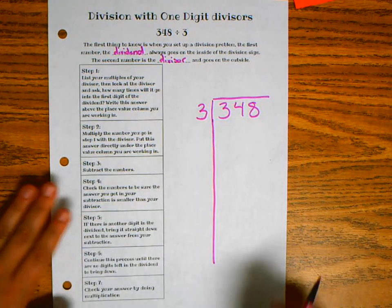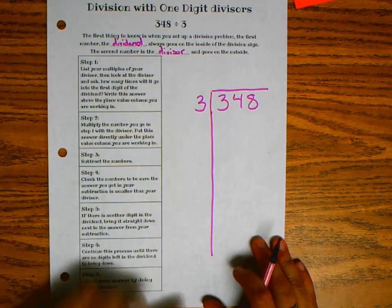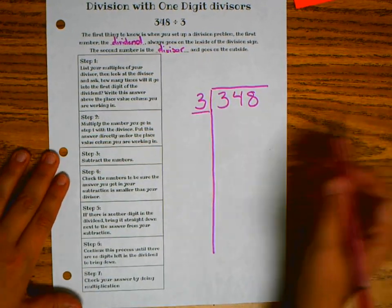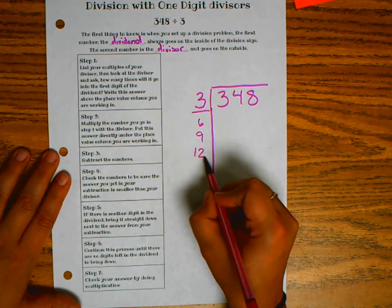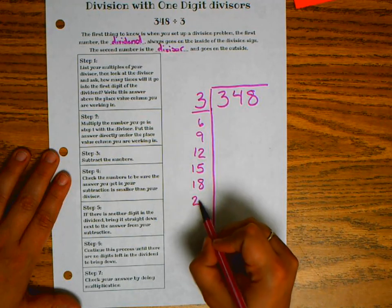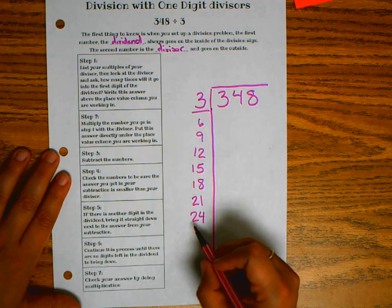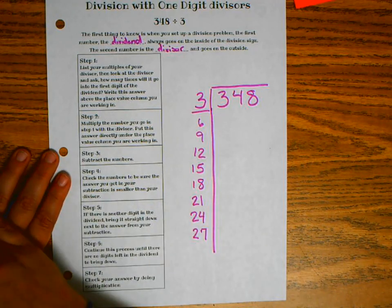So what I suggest that you do is you list out your multiples of whatever your divisor is. So in this case, our divisor is 3. So that's 3, 6, 9, 12, 15, 18, 21, 24, 27.